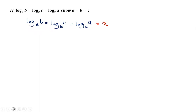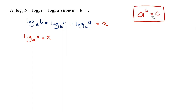First, I'm going to break this down: log_a(b) equals x. You need to understand how to change log to indices and indices to log. For example, if a^b = c, this is indices form. To change to log, you just switch these two things.